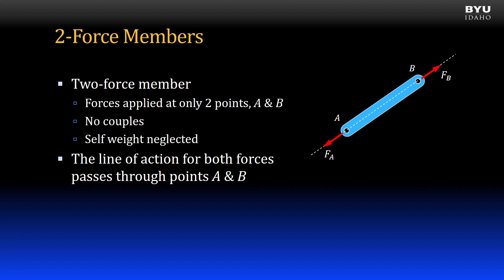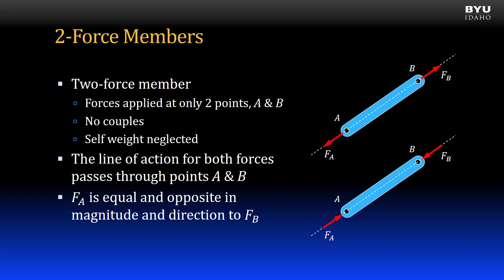In a two-force member, the line of action for both forces passes through points A and B. Also, force A is equal and opposite in magnitude and direction to force B. We call the condition on the top tension and the condition on the bottom compression.